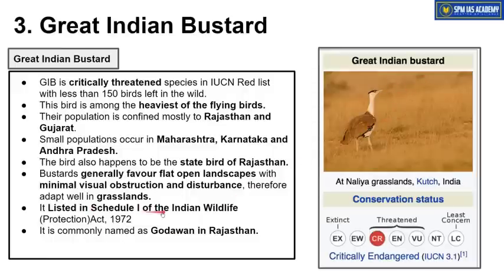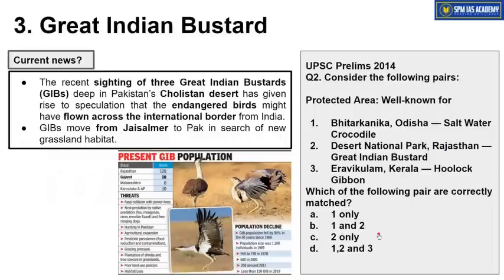The Great Indian Bustard has been listed in Schedule 1 of the Indian Wildlife Protection Act of 1972, giving it one of the highest levels of protection. It is also known as 'Godawan' in Rajasthan — that is its local name in the state. Its IUCN categorization is Critically Endangered. Recent news: several Great Indian Bustards from the Rajasthan side have been crossing the India-Pakistan border and moving into Pakistan, with sightings of birds moving toward Pakistan's Cholistan desert region.